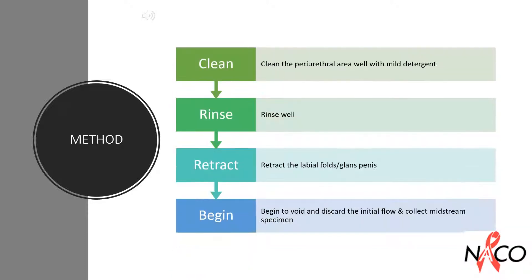The patient should be instructed to clean the periurethral area well with a mild detergent to avoid contamination. Importantly, the patient should also be instructed to rinse well because the detergent may be bacteriostatic. Once cleansing is completed, the patient should retract the labial folds or glans penis and begin to void, then collect the midstream urine sample after discarding the initial flow.